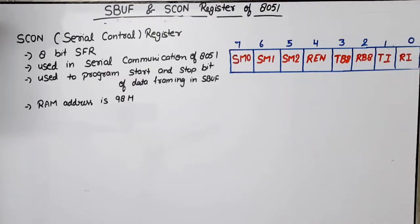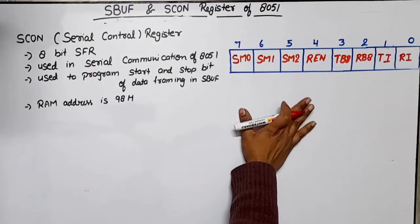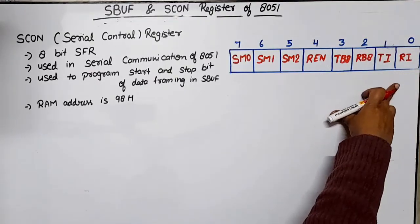The serial buffer converts that data into frames. Framing means it adds one start bit and one stop bit to the 8-bit data, making a total of 10 bits transmitted serially through the TXD line. The programming of how to add the start bit and stop bit is done by the Serial Control Register. The address of SCON is 98H in RAM. It is an 8-bit register with bits 0 to 7.